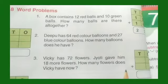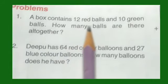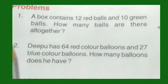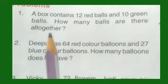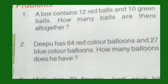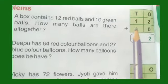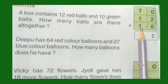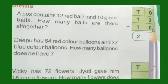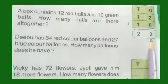The first one is already done. The next problem: a box contains 12 red balls and 10 green balls. How many balls are there altogether? So, 12 red balls and 10 green balls — altogether that is 22 balls.